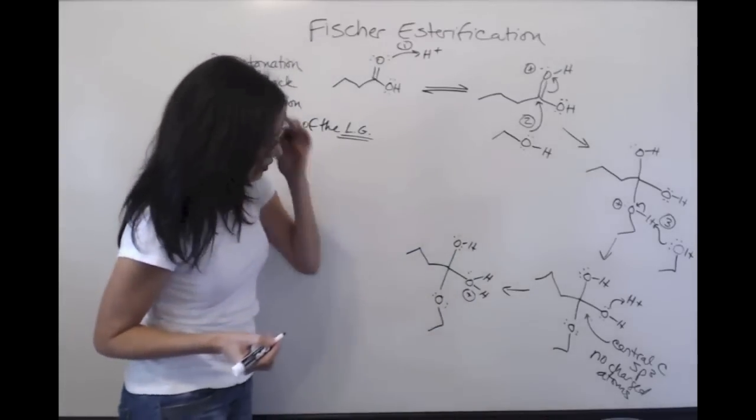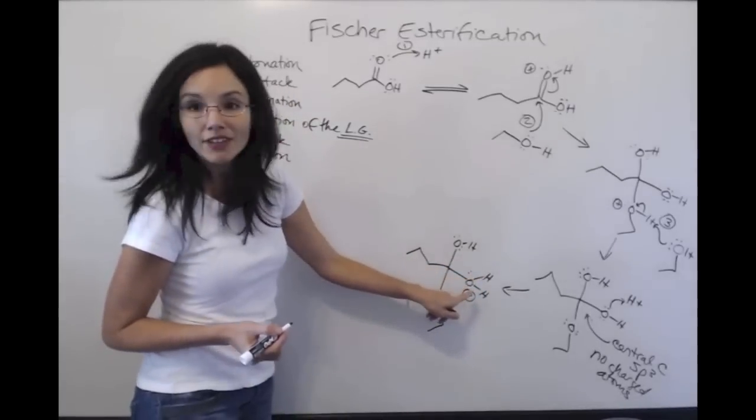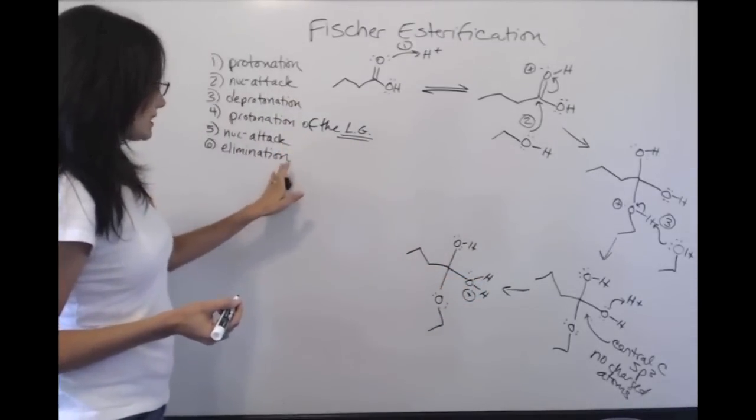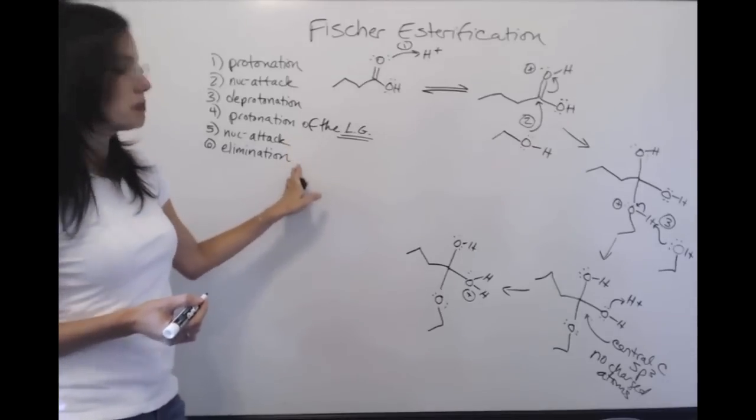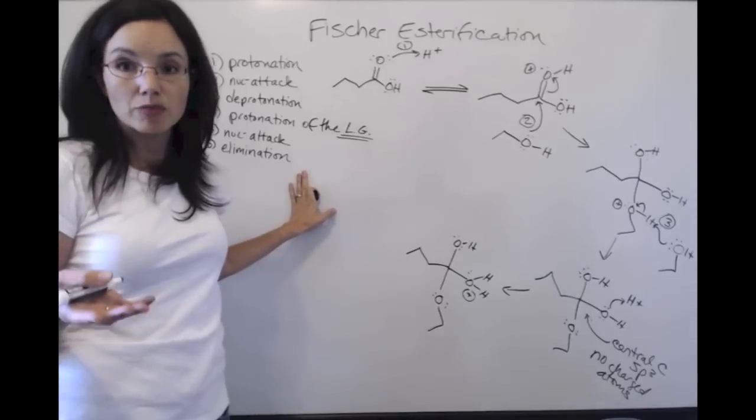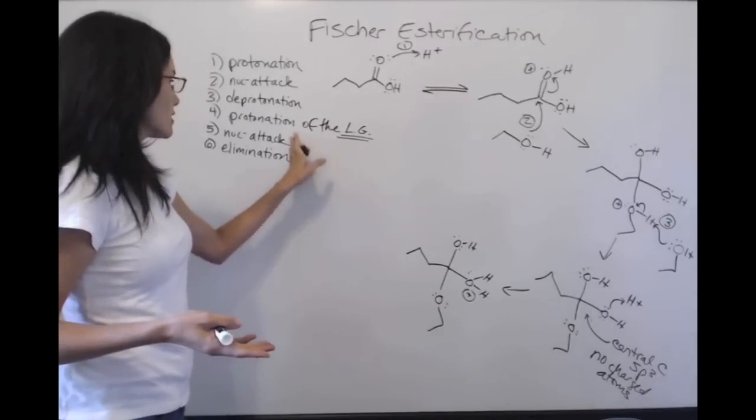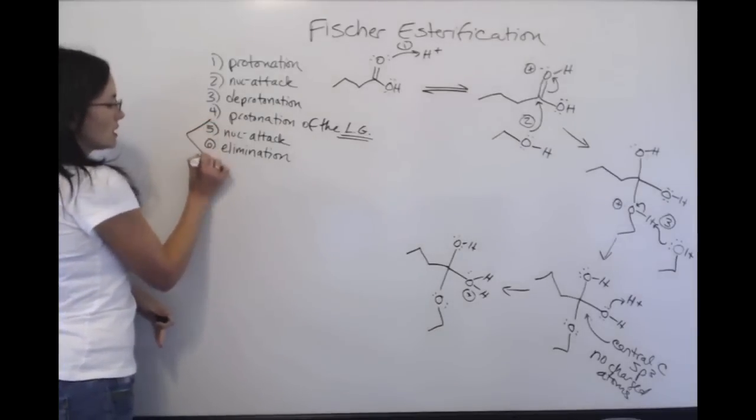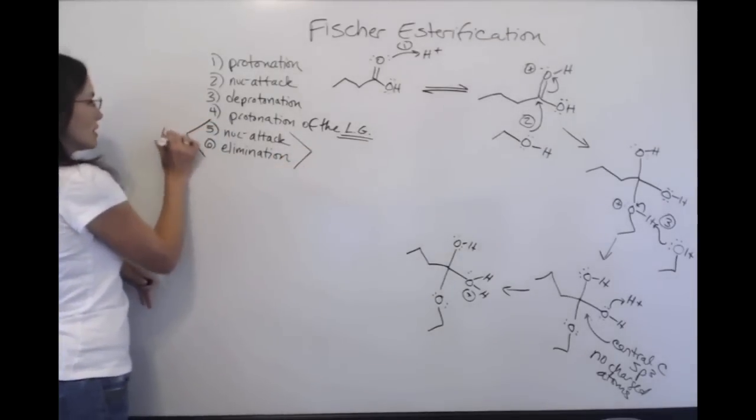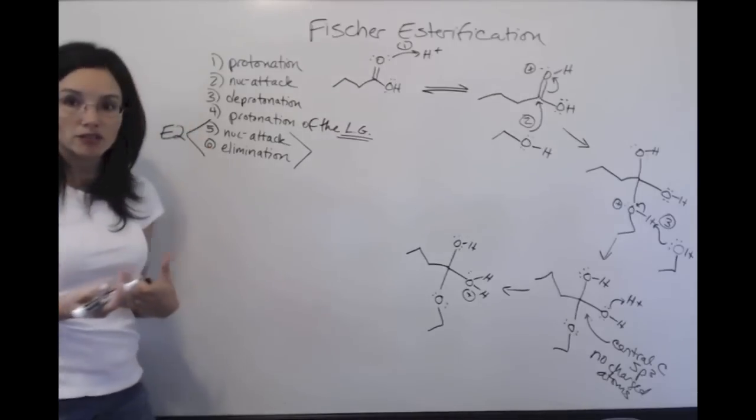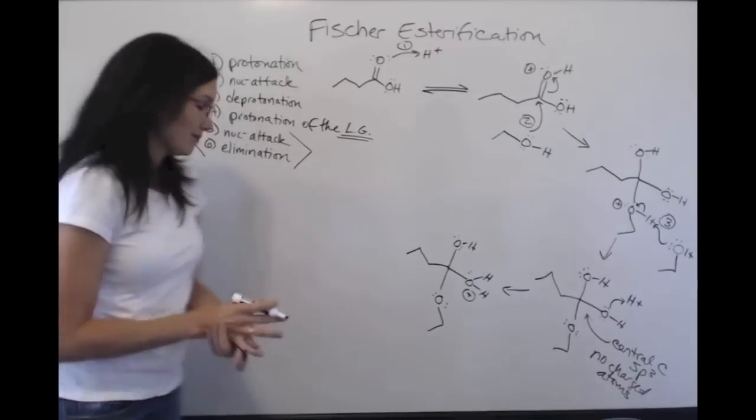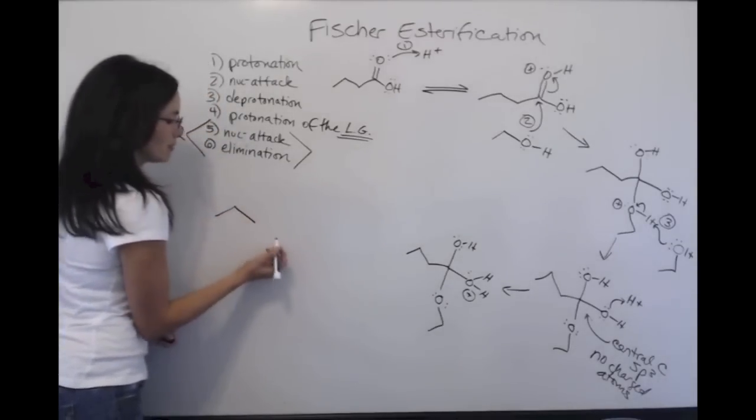All right, so now we've protonated this. This is an excellent leaving group now. And we're ready for nucleophilic attack and elimination. This is, for most people, one of the more difficult parts of the Fischer esterification process. And it really helps, I think, to look at this and to realize these happen in one single step that mirrors the E2 process that you learned in the beginning of first semester. If you want to go back and review E2 real quick, let me just show you a typical E2 reaction.